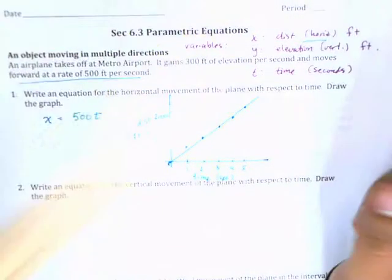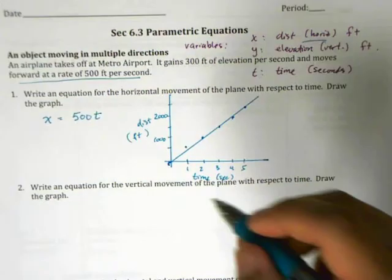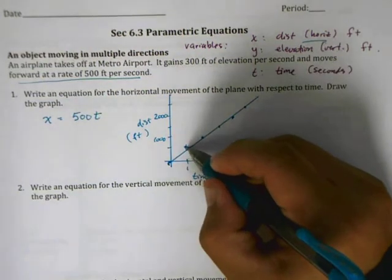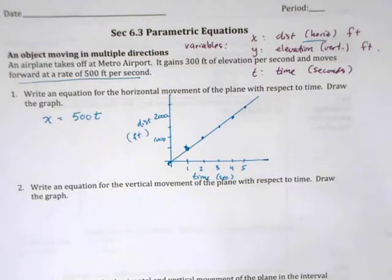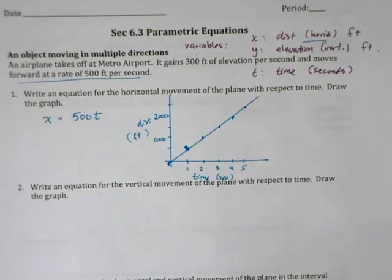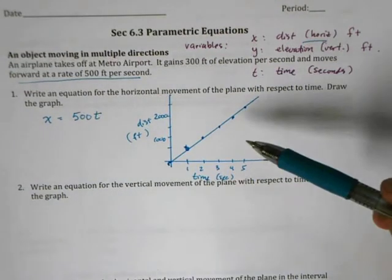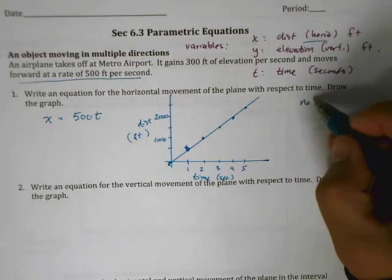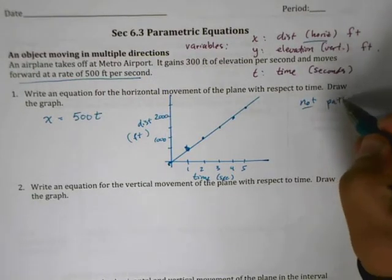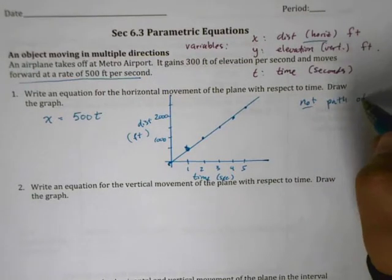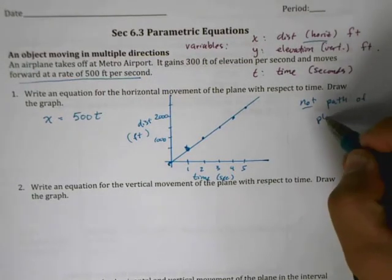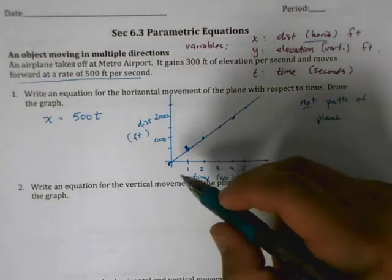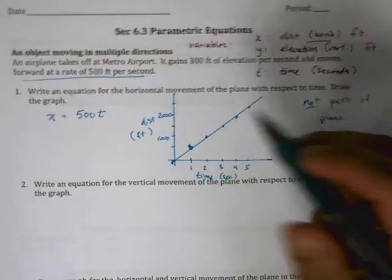That gives us a pretty good picture of what's happening. Keep in mind that this is not the path of the plane — this is a graph of time versus horizontal distance.